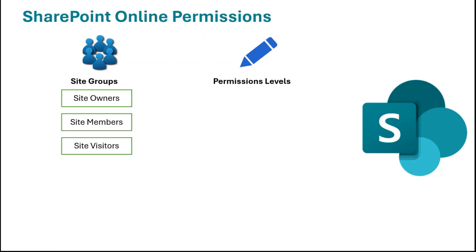A site visitor has read-only permission. A user who is part of the site visitors group can view the site, view documents within a document library, and download documents, but cannot make any changes within the site. These three groups are the default groups created when we create a SharePoint site, but we can create multiple groups as per our requirements.